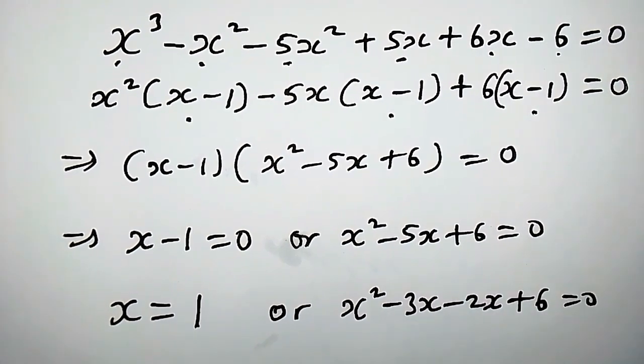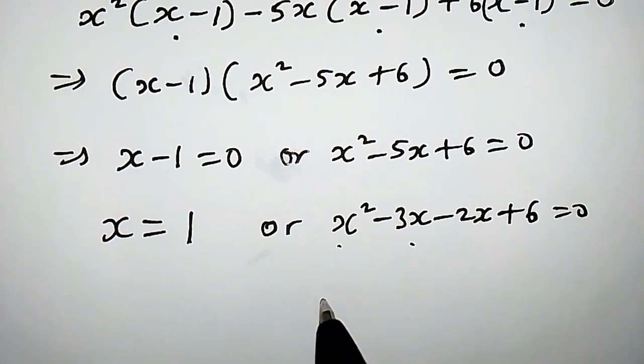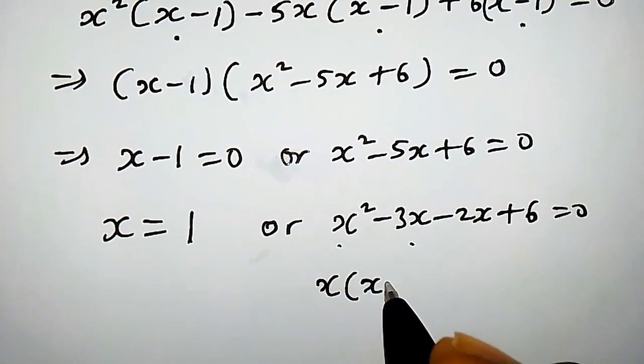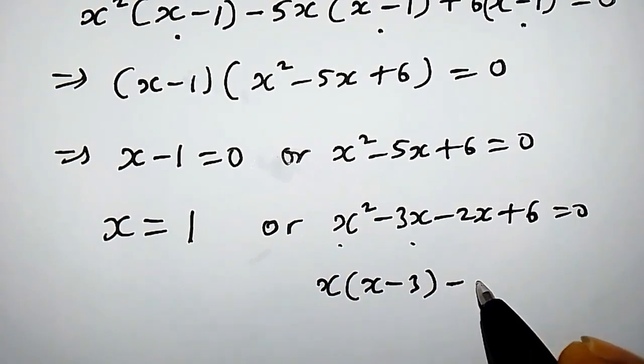From the quadratic, x squared minus 3x minus 2x plus 6 equals 0. x is common in the first pair, giving x into x minus 3, and minus 2 is common in the second pair, giving minus 2 into x minus 3.